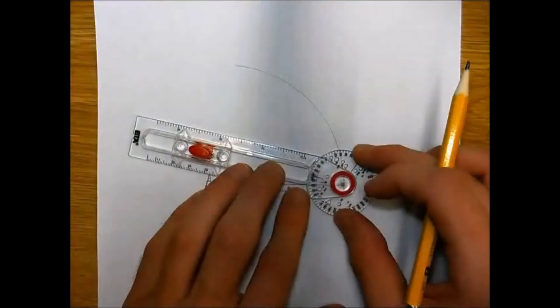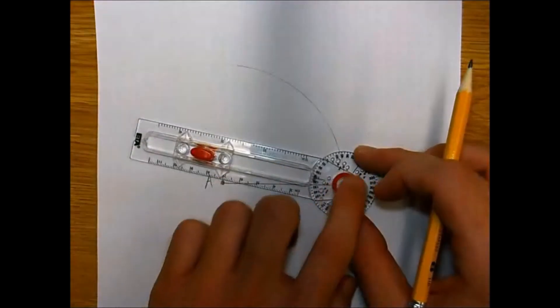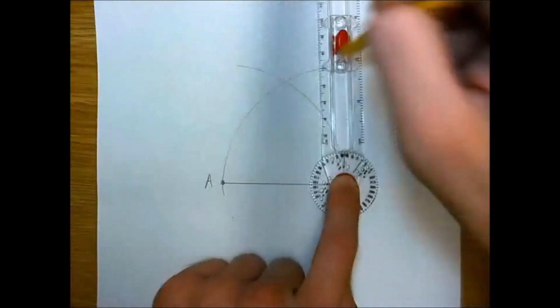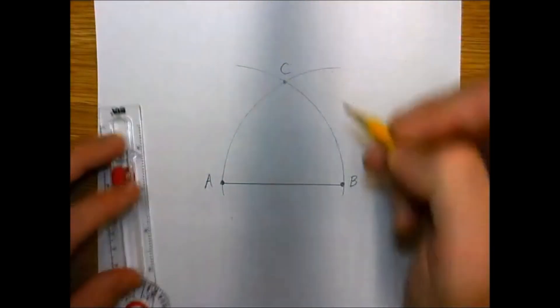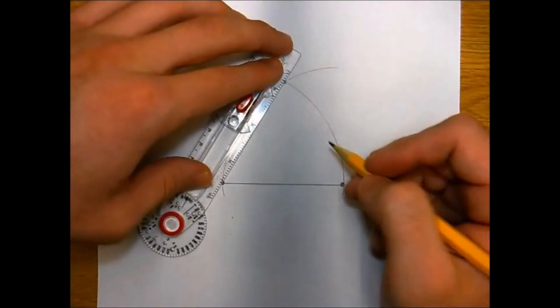We swing an arc from point A above, and then we repeat the same process from point B. We swing an arc from here and notice that the two arcs intersect above. We'll call that point C.